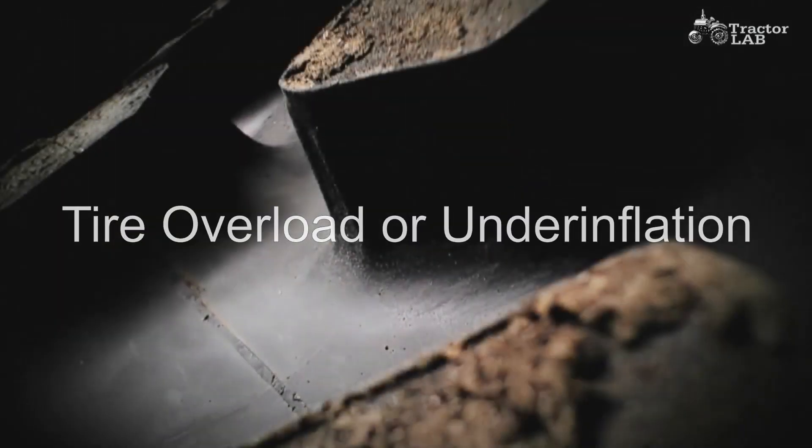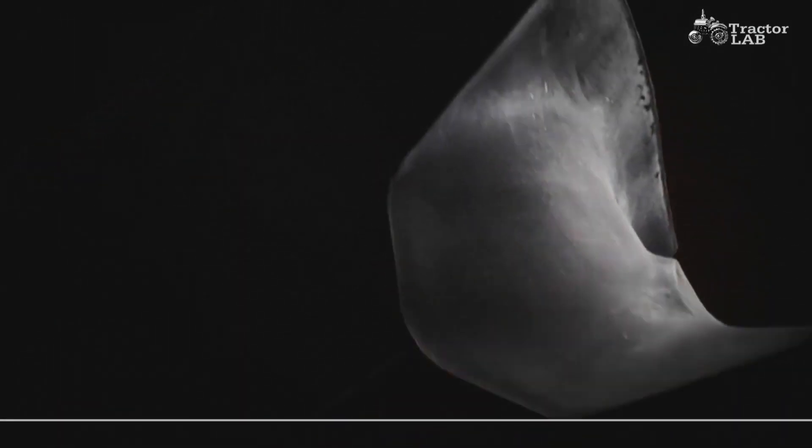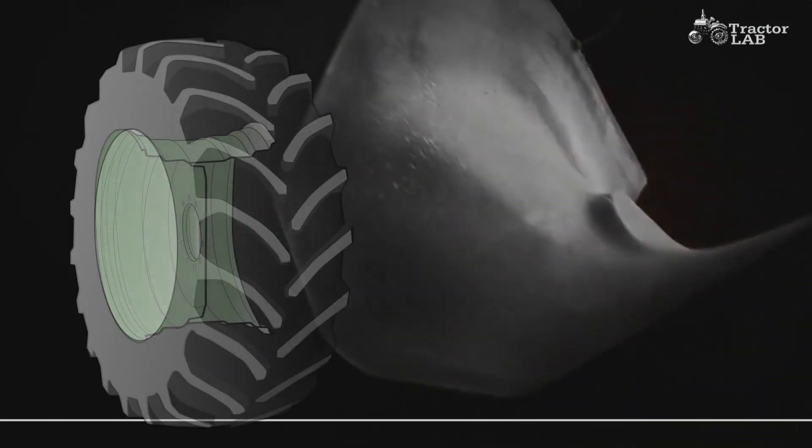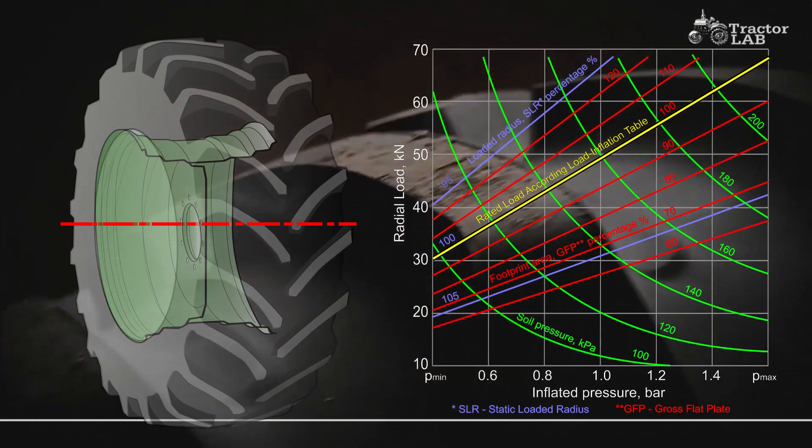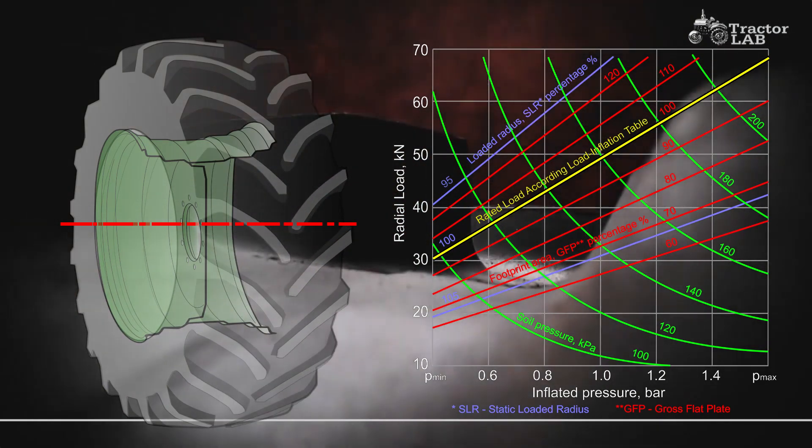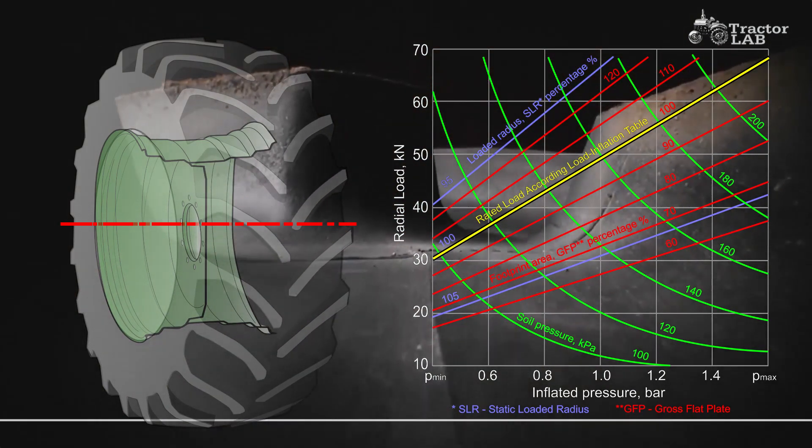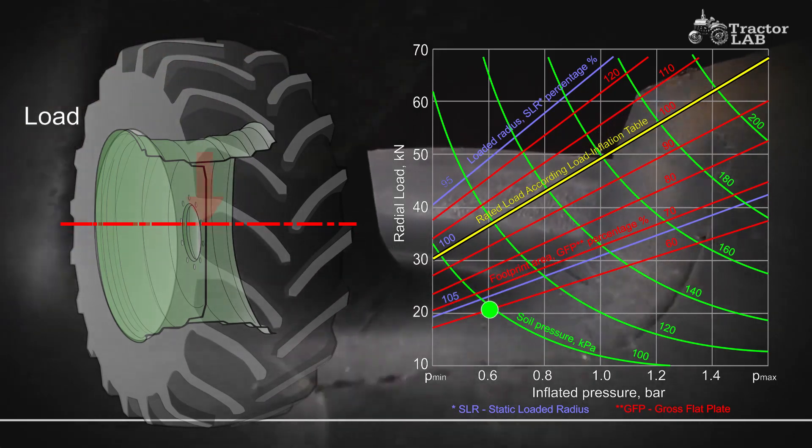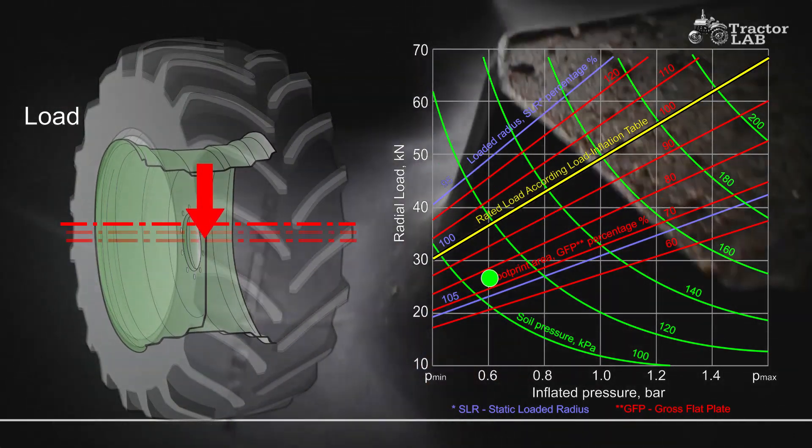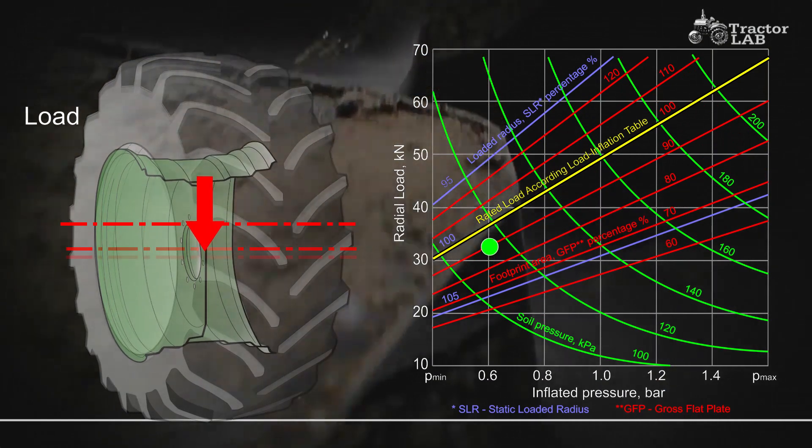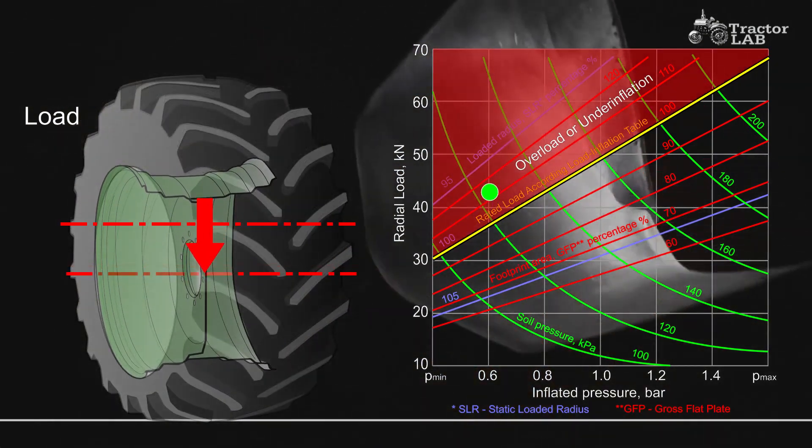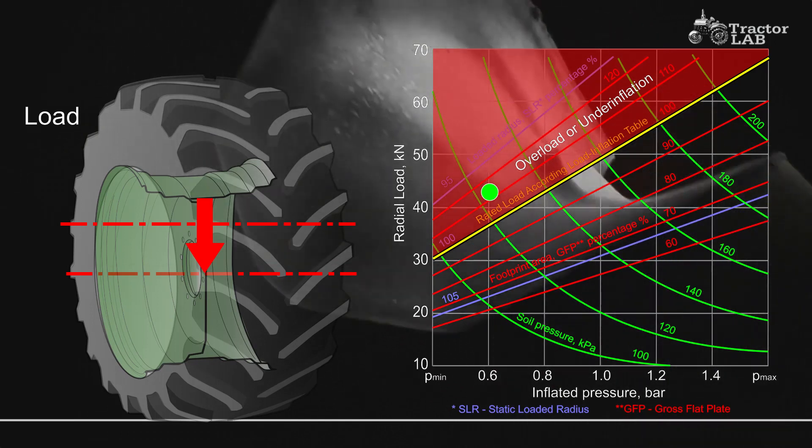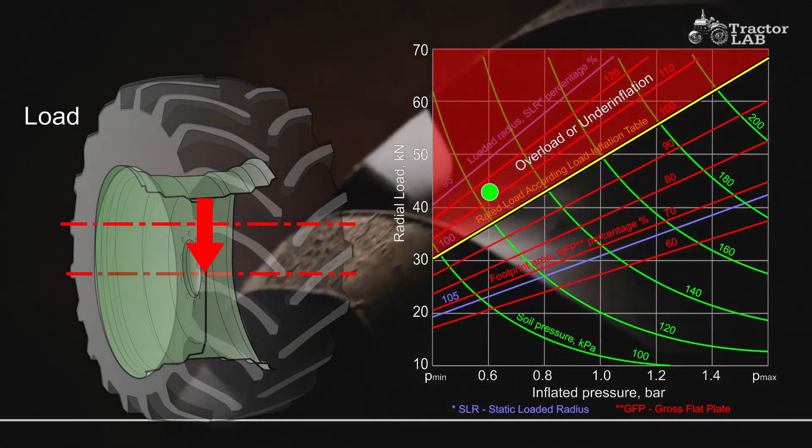Tire overload or underinflation: Overloading and underinflating a tire both have the effect of over-deflecting it. Under these conditions, the tread will wear rapidly and unevenly, particularly in the shoulder area. Radial cracking in the upper sidewall area will be a problem with underinflated bias drive tires in high torque applications.